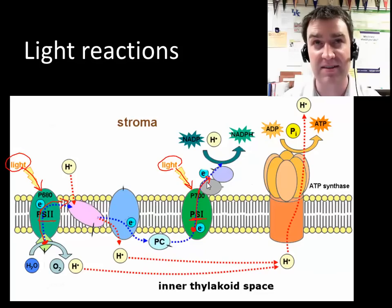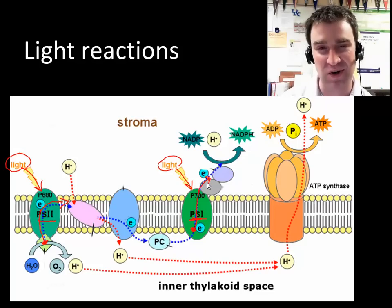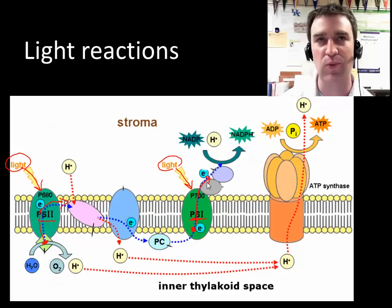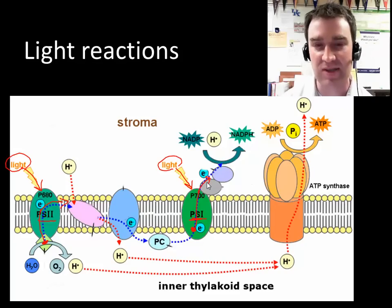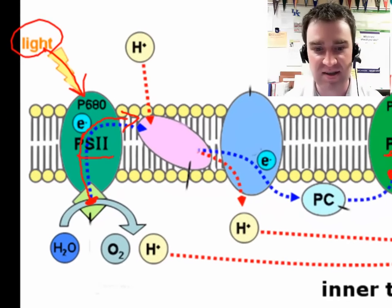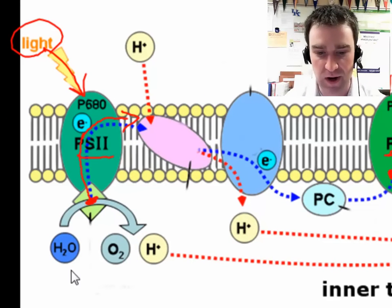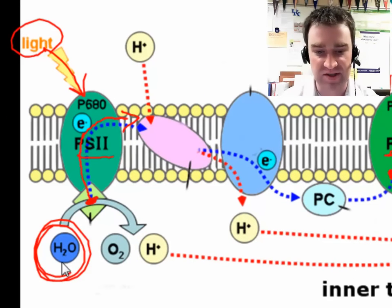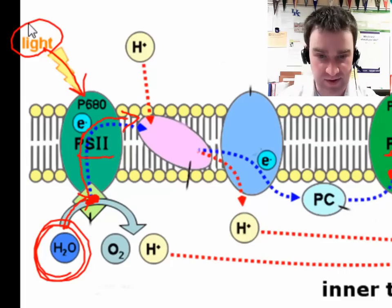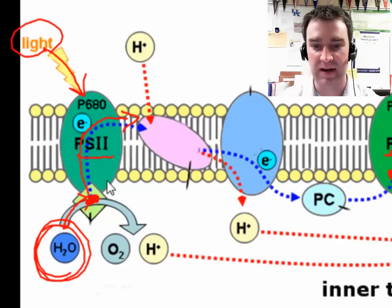Whenever a photosystem does that, it essentially leaves a hole in the pigment — we sometimes refer to it as a hole. Those pigments need new low-energy electrons if they're going to repeat the process. Ideally in photosynthesis, plants want the pigments to continuously absorb light and constantly be making new high-energy electrons to power the process. In the initial photosystem, that's going to require water.